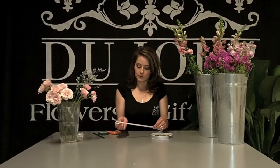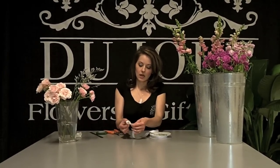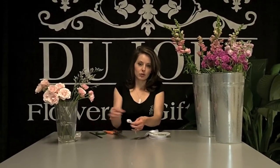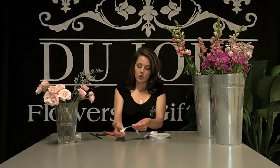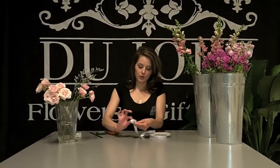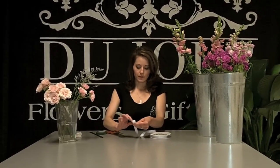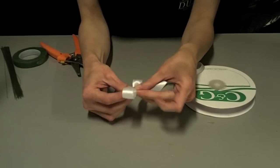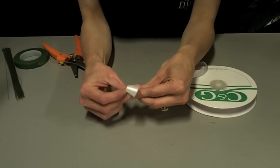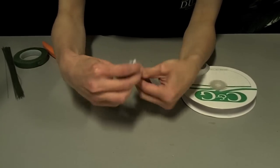I'm going to start out with a loop. Your first loop is going to dictate how big your corsage bow is, or your bow in general is. You start out with a loop, you're going to fold over and make the same size loop. Pinch it in the middle, and that's going to be the starting point of your bow.